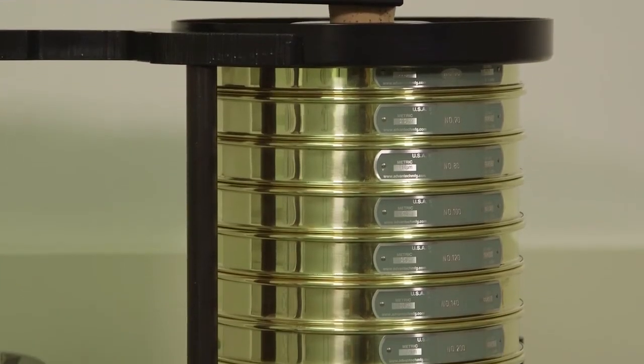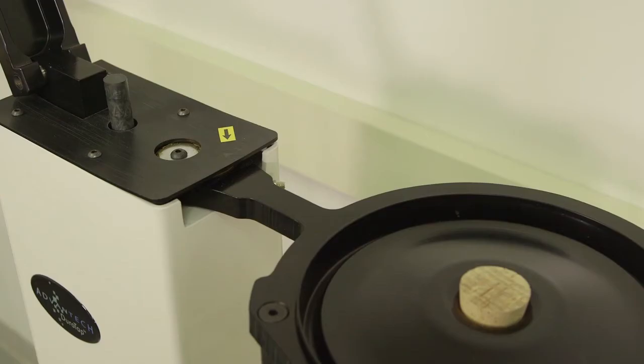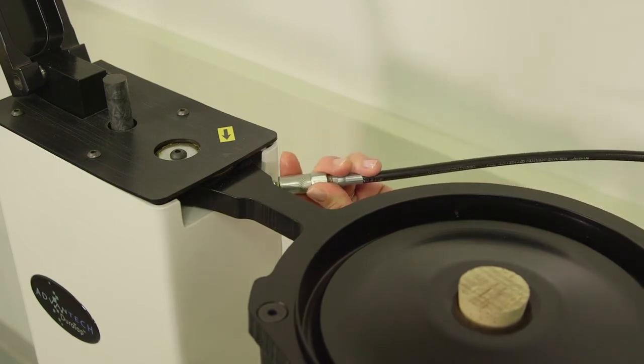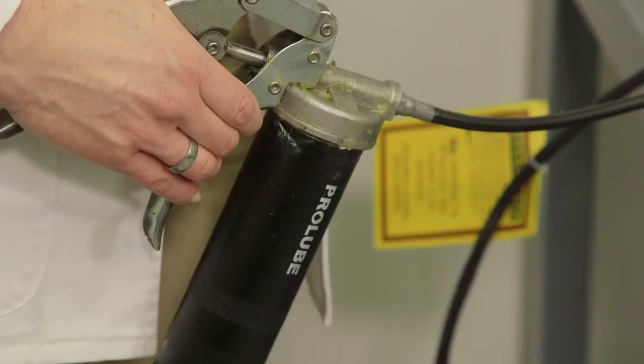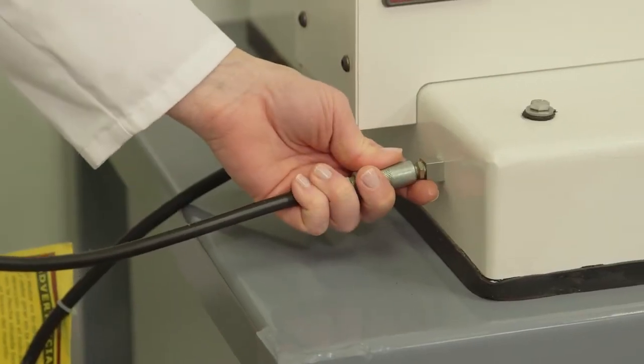Routine calibration is not required; however, greasing of the bearings is necessary after every 5 hours of operation. A general-purpose grease containing graphite is recommended.